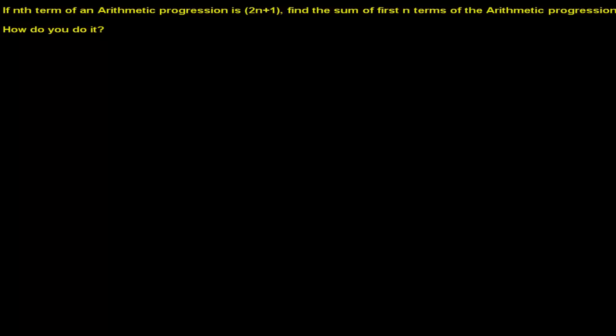Hello friends, recently I checked some comments and saw a question. The viewer is asking: if the nth term of an arithmetic progression is 2n+1, find the sum of the first n terms of the arithmetic progression. How do you do it? So I copied the comment and I'll post it over here.